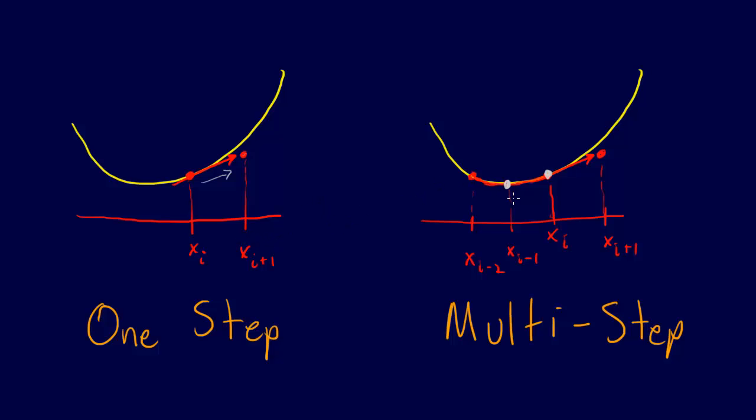Now, the multi-step methods, in contrast, they say, well, why are we going to have only one step? Why are we going to think that there's only one step? We have more information than that, and so what we're going to do is we're going to say,